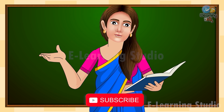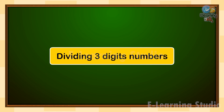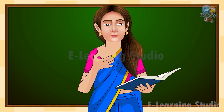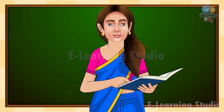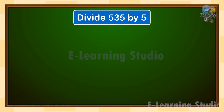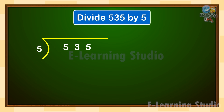Hope this is clear to all. Thank you and happy learning! Dividing 3-digit numbers. Hello children, welcome back. In today's video, we will learn a new concept which is dividing 3-digit numbers. Let us divide 535 by 5. Take the first digit of the dividend from the left and check if it is greater than or equal to the divisor. Here, 5 is equal to 5, so 5 goes into 5 one time.